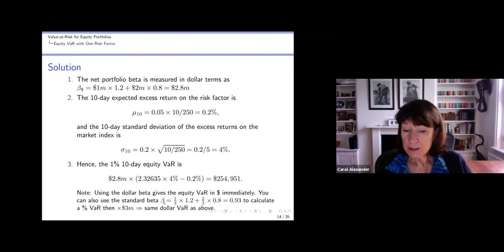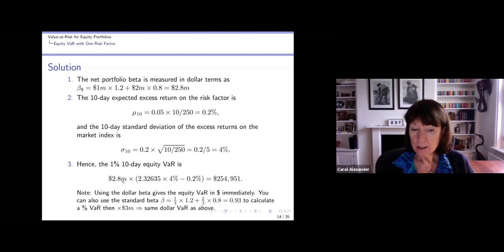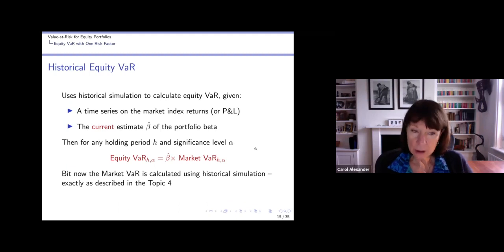Now we could have just used the percentage beta of 0.93 to get a percentage VaR and then multiply the percentage VaR by 3 million. And we would have got the same result. But if we do 0.93 here and the same thing here, and then the result here multiplied by 3 million, we would have got the same thing.